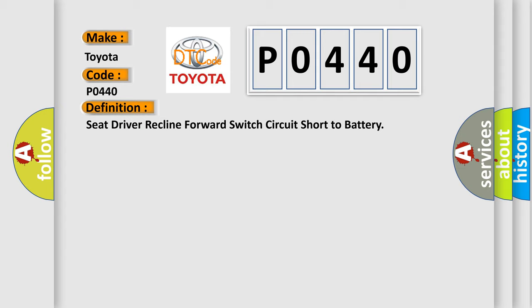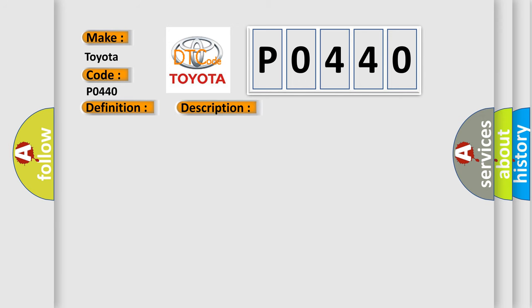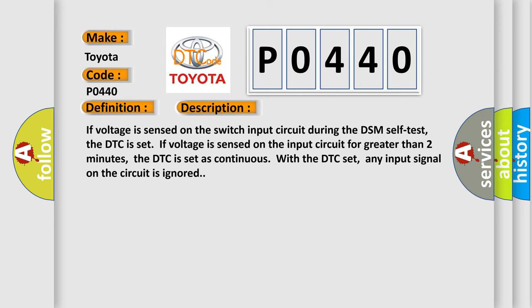And now this is a short description of this DTC code. If voltage is sensed on the switch input circuit during the DSM self-test, the DTC is set. If voltage is sensed on the input circuit for greater than two minutes, the DTC is set as continuous. With the DTC set, any input signal on the circuit is ignored.